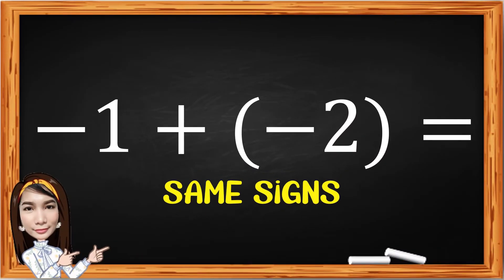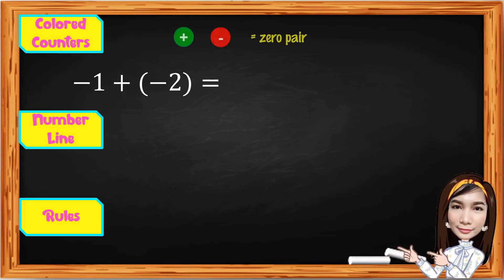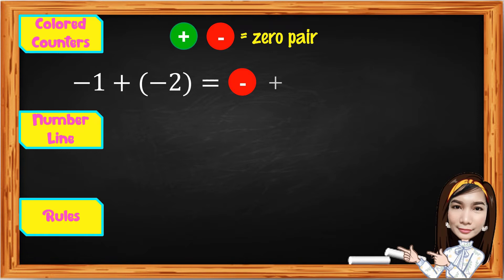Next, the given is negative 1 plus negative 2. They are the same sign — both negative. Since there are no positive integers, there is no zero pair to cancel. We use red counters only to represent negative integers. We have 1 red counter plus another 2 red counters. Combining and counting all of them gives a result of negative 3.